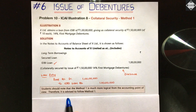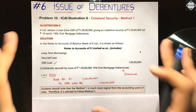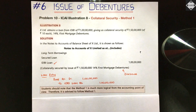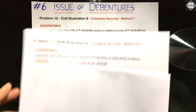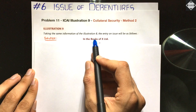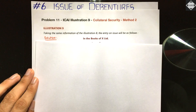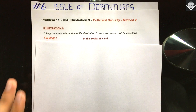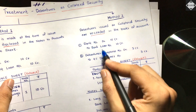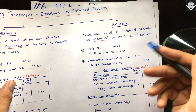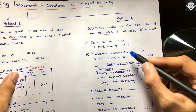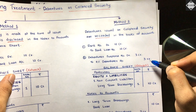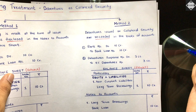Now the same question is solved by Method 2 in Illustration 9, taking the same information from Illustration 8. The entries to pass are: first, Bank Account to Bank Loan — 1 crore (the loan entry, no matter what); and second, Debenture Suspense Account debit to 14% Debentures Account — 1 crore 50 lakhs 1 crore 50 lakhs, because you have to record the debenture.